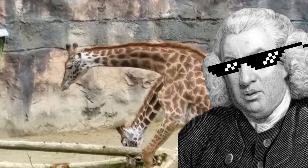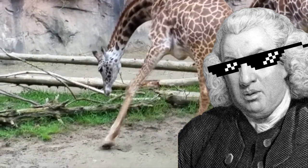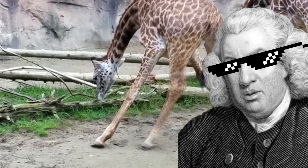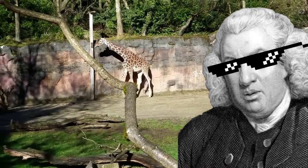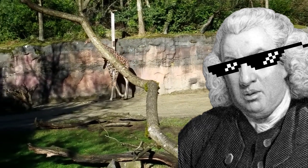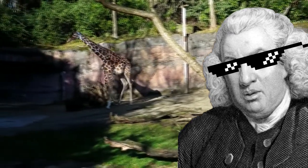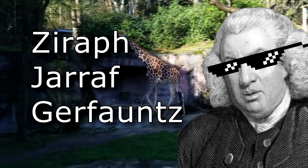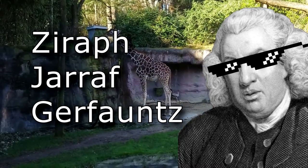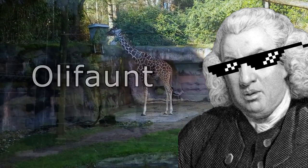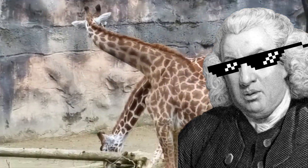Because this animal was so seldom seen where English was spoken, but was very fascinating to everyone around the world, it was mentioned from time to time in texts about the natural world, and each time it seemed to have a different name. Many writers had a different spin on the name, or it was borrowed from different languages. Some examples of these words would be ziraf, jarraf, and gerfonts — this last one was probably due to some confusion with the word oliphant, where we get the modern word elephant.